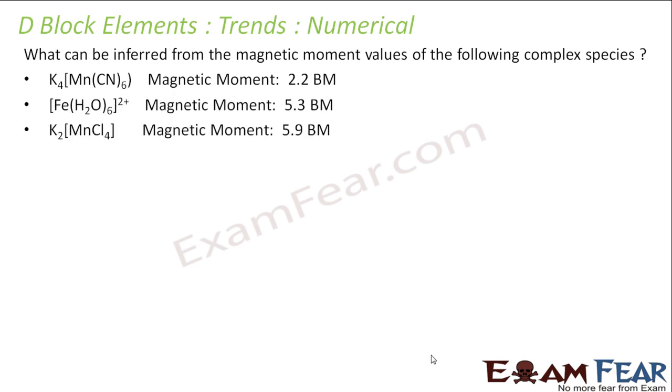What can be inferred from the magnetic moment values for this complex? For K4[Mn(CN)6] the magnetic moment is 2.2 Bohr magneton. If n equals 1, μ is √3 which is 1.732. If n equals 2, μ is √8 which is 2.83. This value of 2.2 is almost near to 2.83.